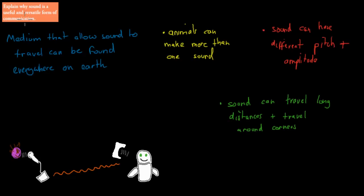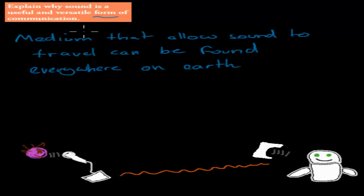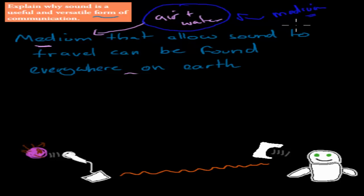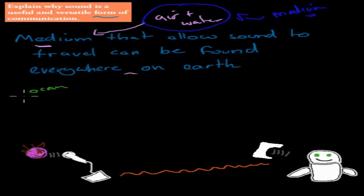The dot point asks us to explain why sound is a useful and versatile form of communication. First, mediums that allow sound to travel can be found anywhere on Earth — we can find air and water basically in any part of the world. Wherever there is an animal, there is air or water, and both are really good mediums for transferring sound energy. That means we can use sound as a tool of communication anywhere we are — in the ocean, in a rainforest, or in the sky.